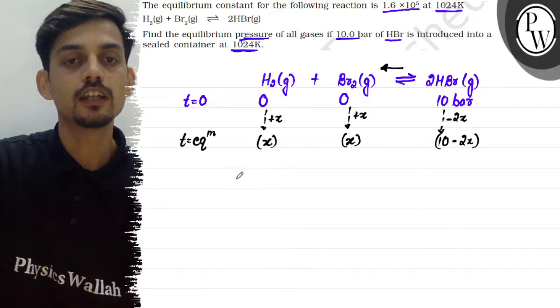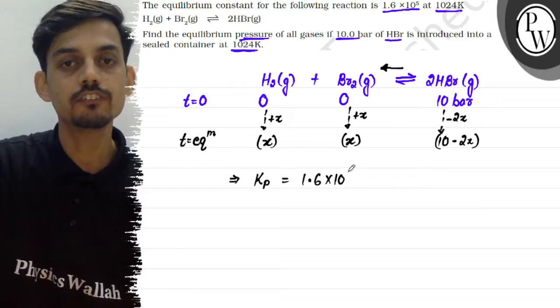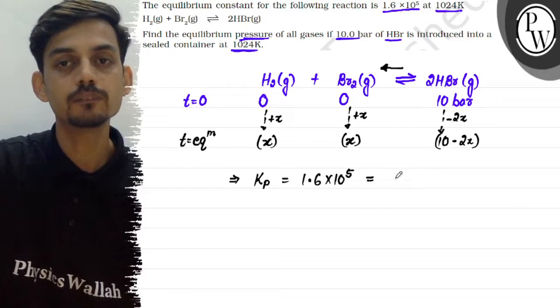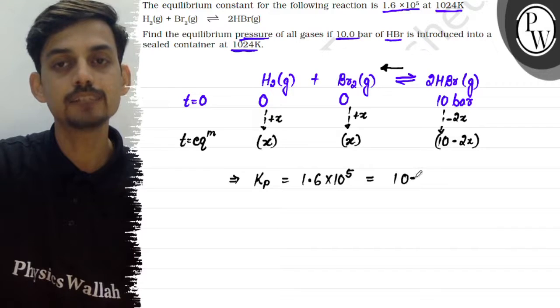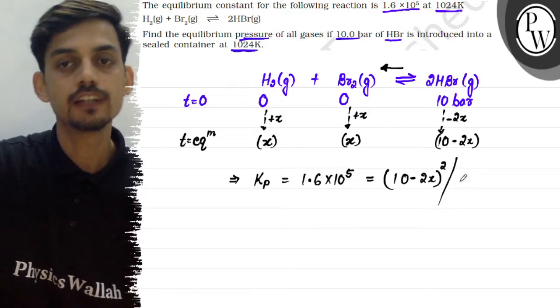Now we can use the expression for Kp. The equilibrium constant Kp is 1.6 × 10^5, which equals the product side pressure terms: (10 - 2x)² divided by